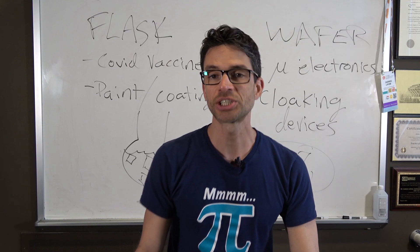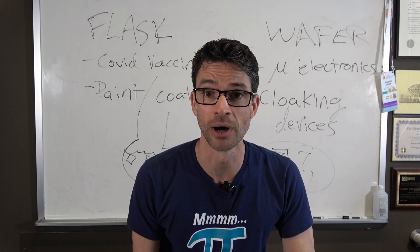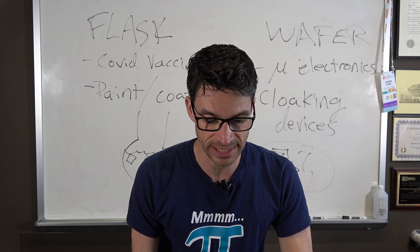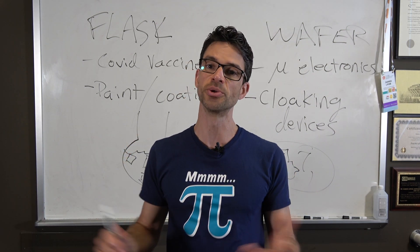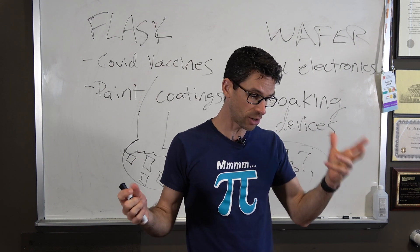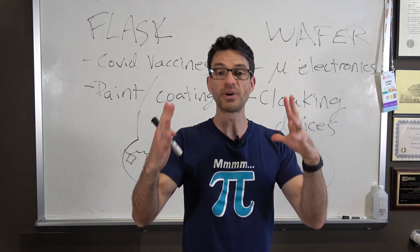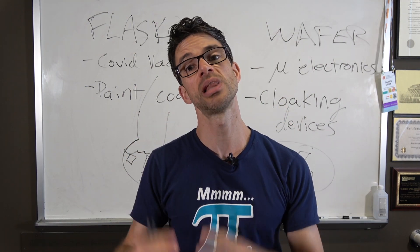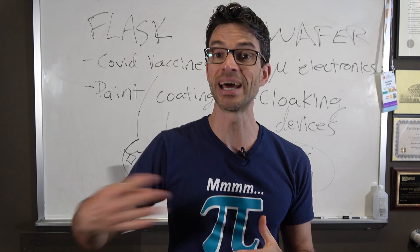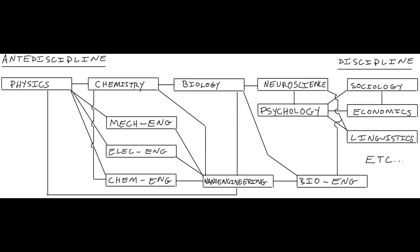One question I get is: how is nanoengineering different from other fields in the physical sciences, natural sciences, and engineering? Let's go through them bit by bit — how do we derive fundamental knowledge from these fields, and how do we apply what we've learned to benefit them? Let's take the natural sciences: physics, chemistry, and biology.